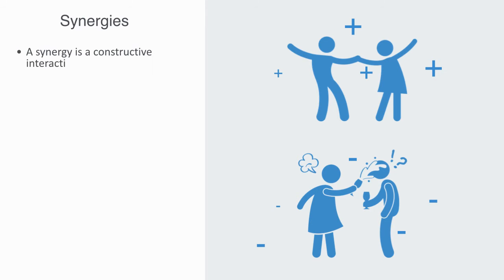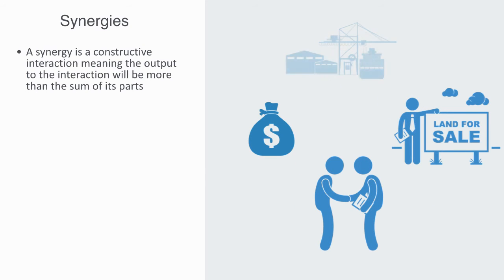A synergy is a constructive interaction, meaning the output to the interaction will be more than the sum of its parts. There are many examples of synergies in our world, from the cooperation of cells and organs in the human body, to many different kinds of synergies produced by socially organized groups. Or for example, all trade is thought to be positive sum.